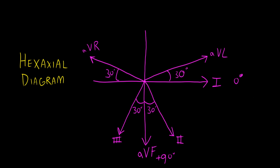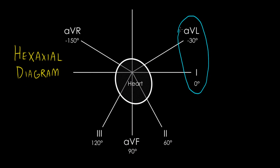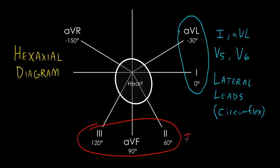So let's go back to our diagram. So leads 1 and AVL over here, along with V5 and V6, make up what we call the lateral leads. They let us see things from the aspect of the lateral portion of the left ventricle, which is supplied by the circumflex artery. Meanwhile, down here leads 2, 3, and AVF represent the inferior leads. They give us a view of the inferior wall of the left ventricle, as well as the right ventricle. This area is supplied by the right coronary artery.